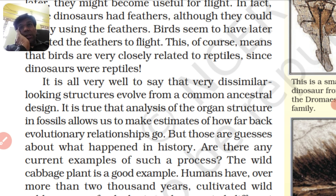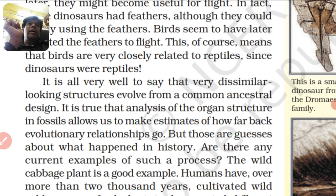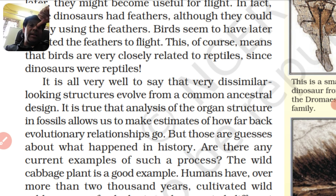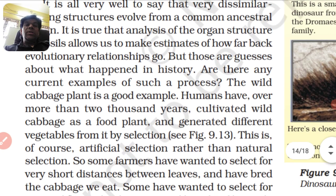When we study fossils over time, we know that any dissimilar looking organisms can be more related to one another than they appear. But those are guesses about what happened in history — we can only guess. We don't have anything fully proven. Are there any current examples of such a process that can be explained to us today?